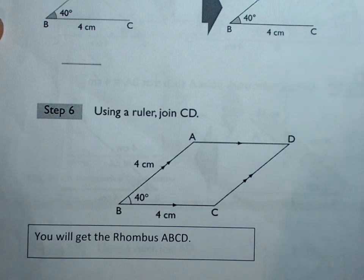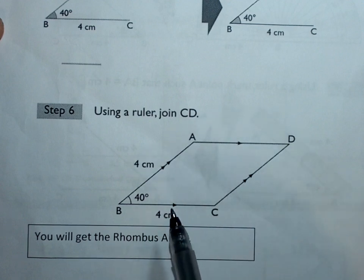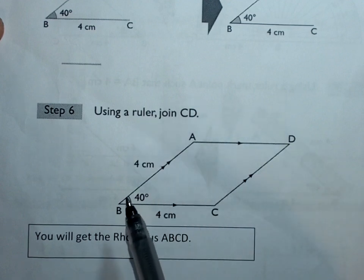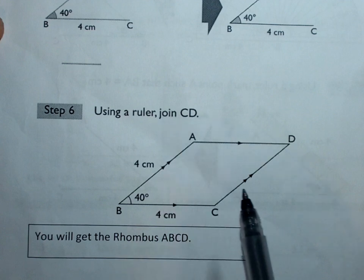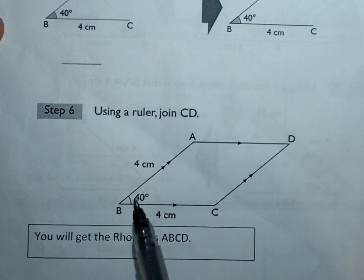The properties are that AD is parallel to BC, AB is parallel to CD. All sides are equal, and this rhombus has an angle right over here at 40 degrees.